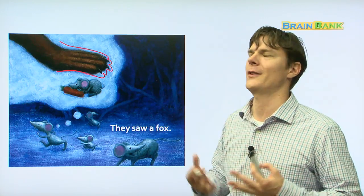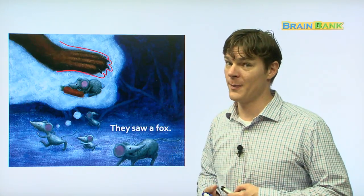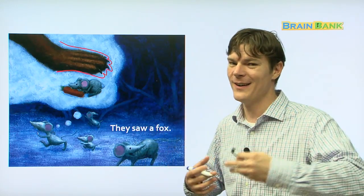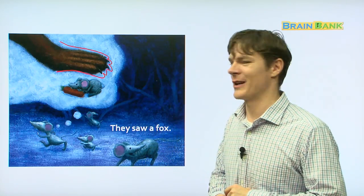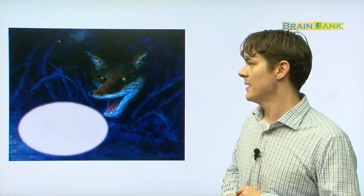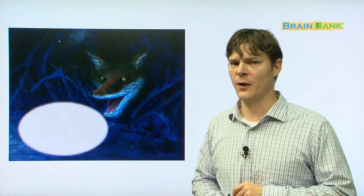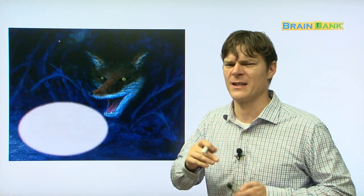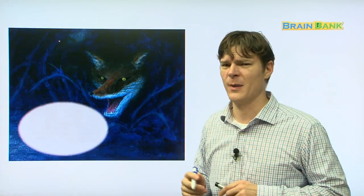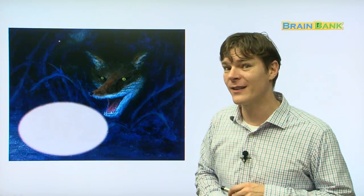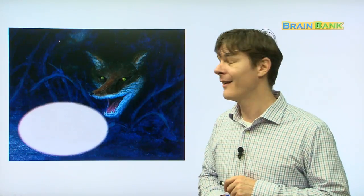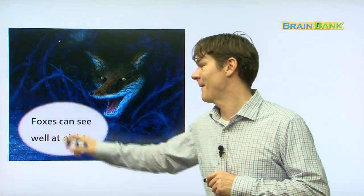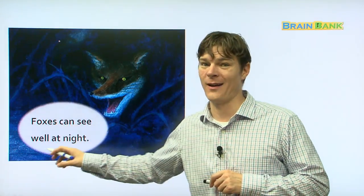They saw a fox. It was a fox. Everyone repeat. They saw a fox. Let's see what he looks like. There he is. The fox is so scary. You know, foxes with their big giant paws, they can pounce on the mice. Really, really well. Because they have four paws. But you know what else foxes can do very, very well? Foxes can see well at night. Everyone repeat. Foxes can see well at night.